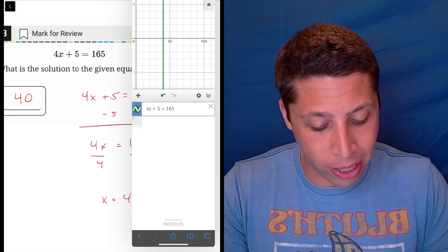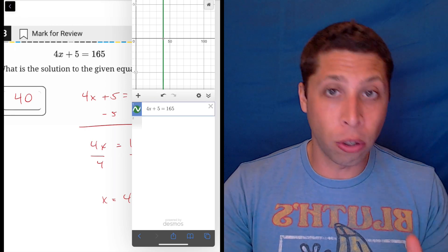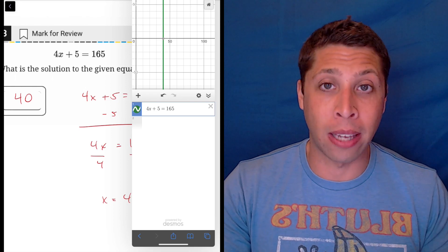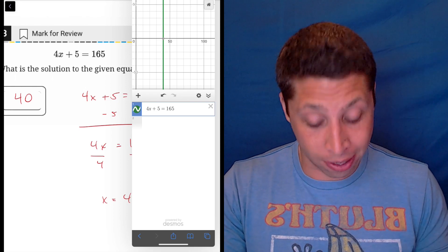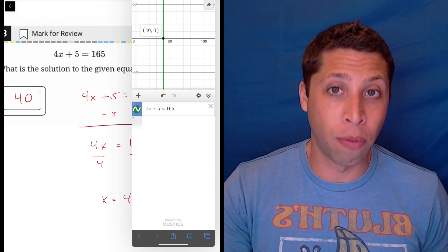But once you do, it is just kind of given, right? So there's the green line. It's a vertical green line because what the calculator is doing here is just solving the equation for you. So it's giving you the x value. And there it is. It's 40.